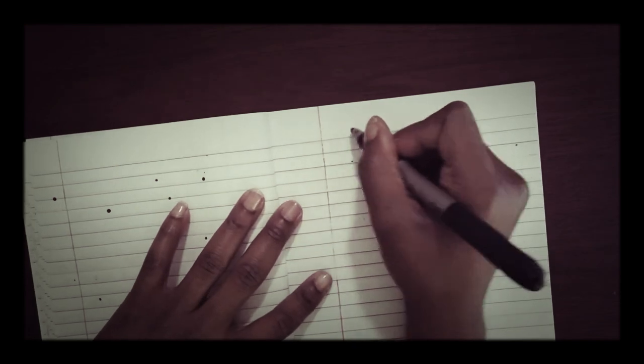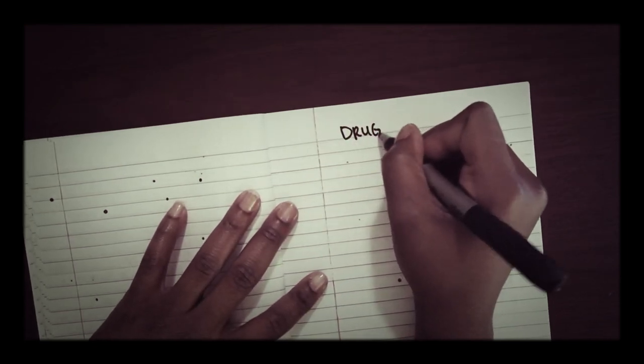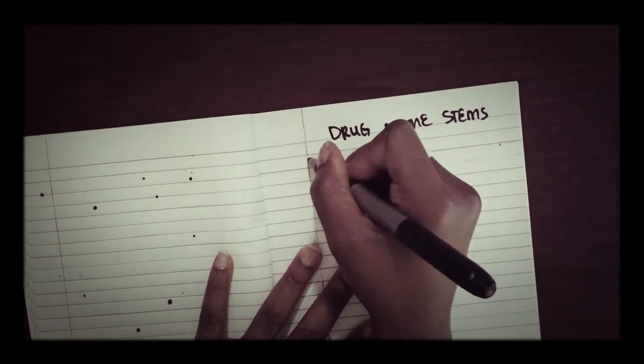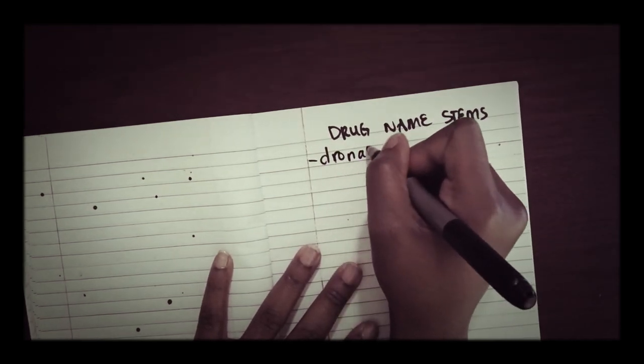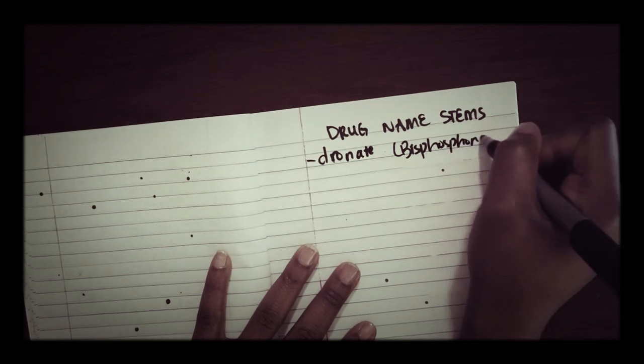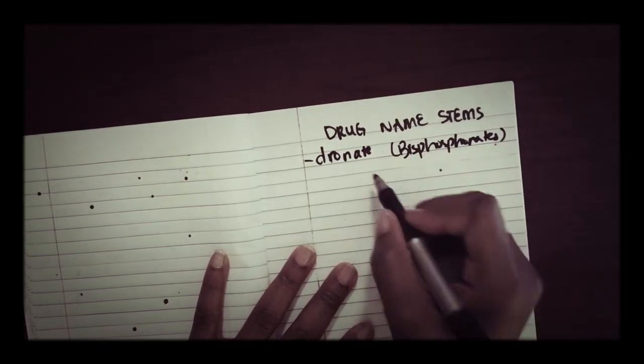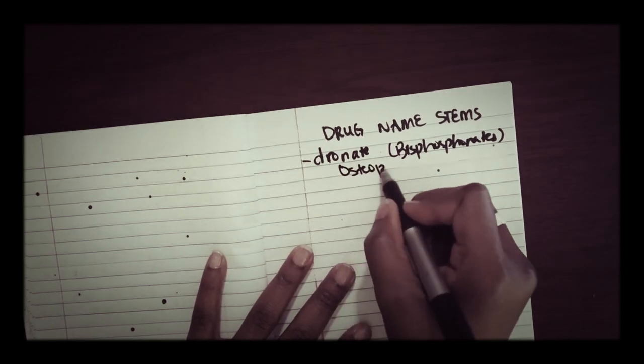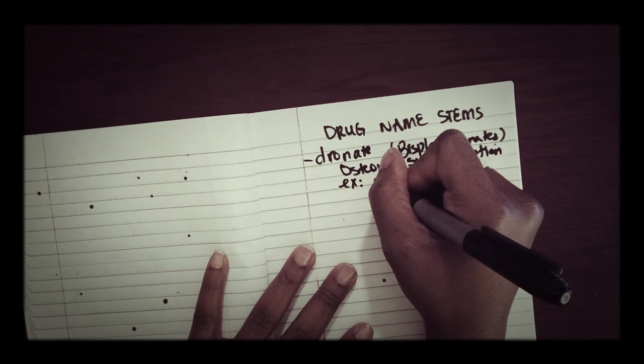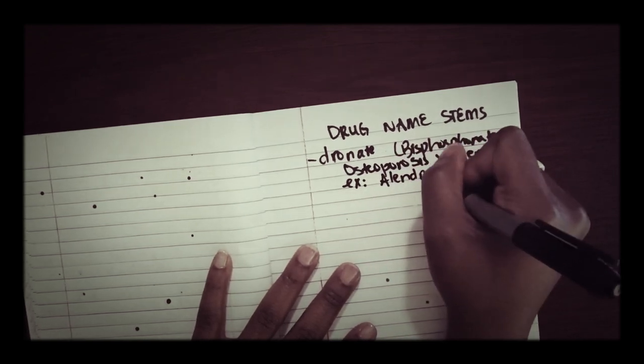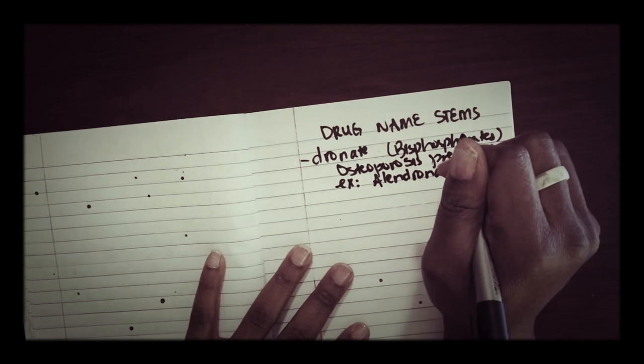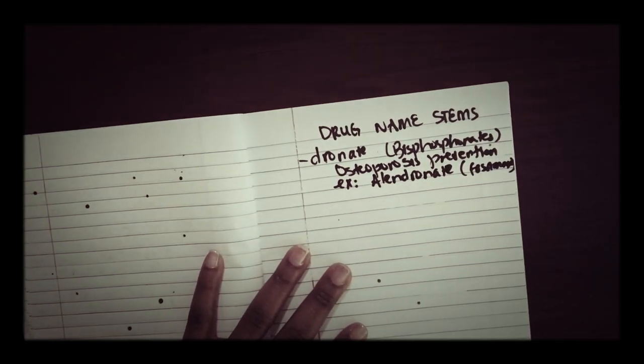Alright, another class, we're still on drug name stems. We have the -dronates. In this class of medications are the bisphosphonates. These are your medications used to prevent osteoporosis. Examples include drugs such as Alendronate brand name Fosamax.